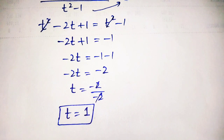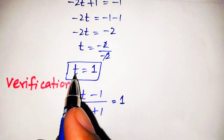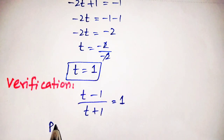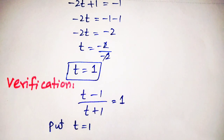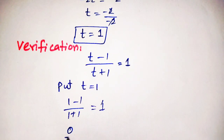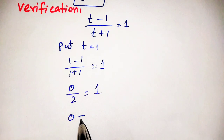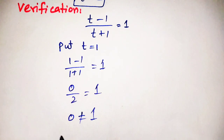Now we will check the validity of this answer by substituting into the given equation. Putting t equals 1, we get (1 minus 1) over (1 plus 1) equals 1, which gives 0 over 2 equals 1. But 0 over 2 is 0, and 0 equals 1 is not possible.